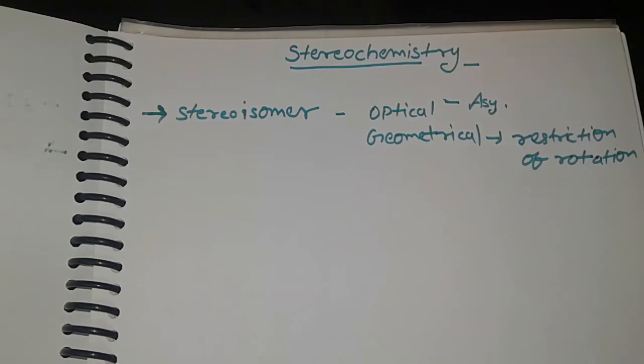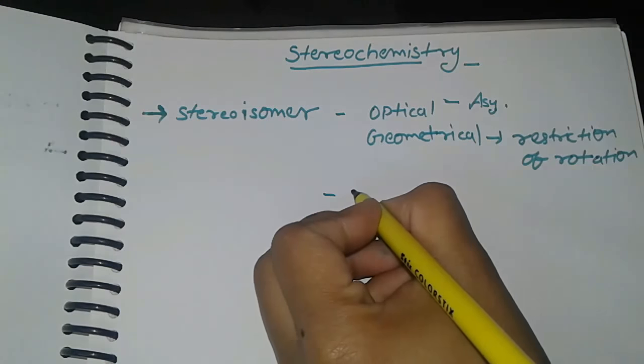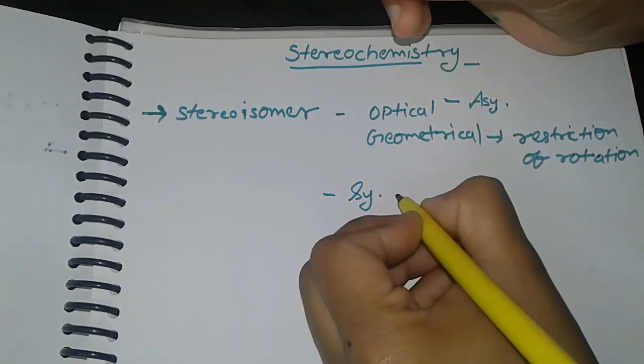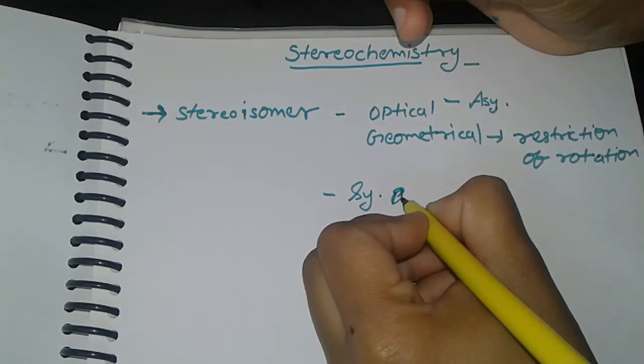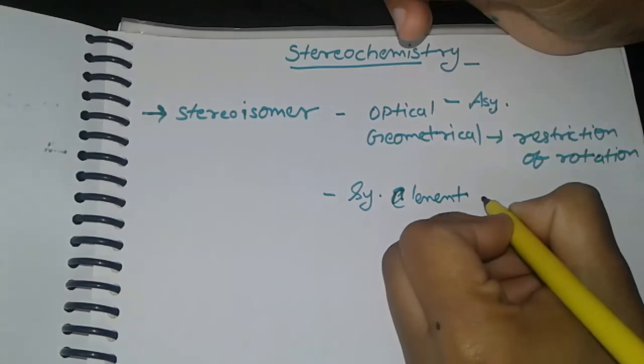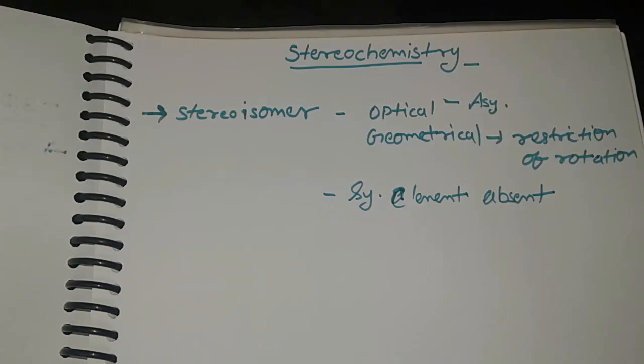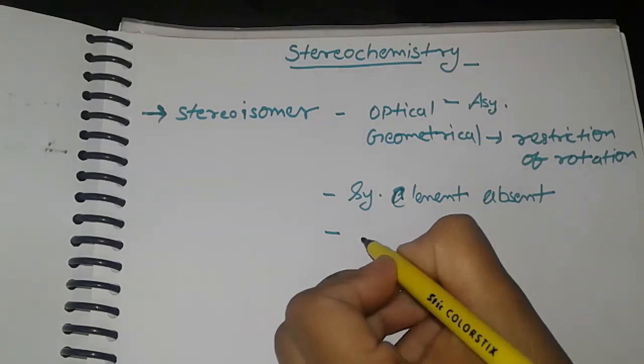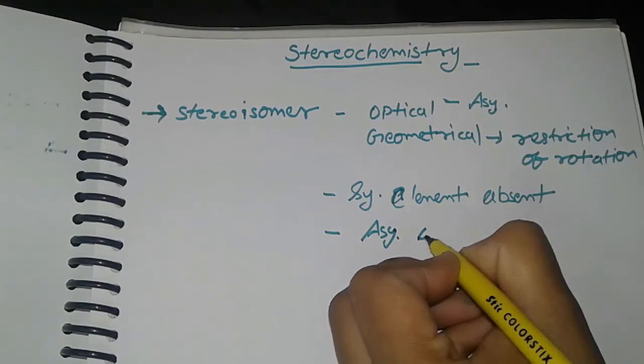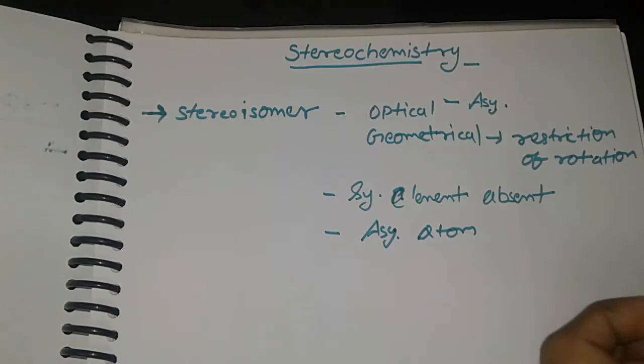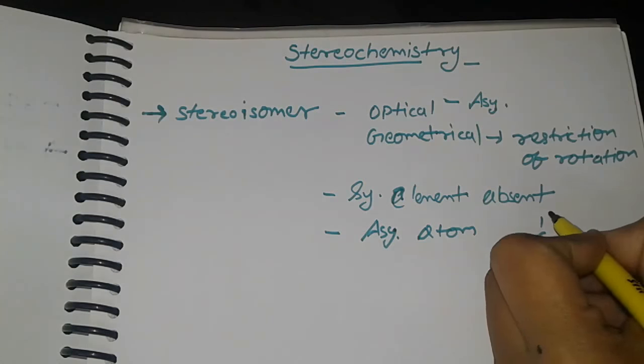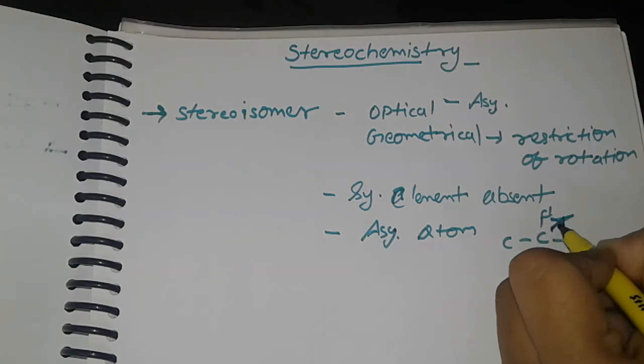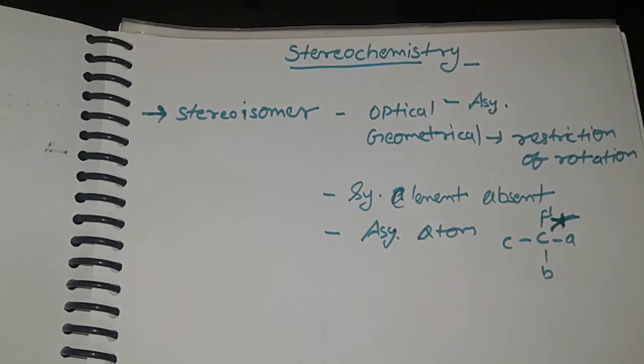Optical isomers: asymmetry can be discovered as two molecules having asymmetry, meaning no symmetry element should be present. Second, the atom itself should be asymmetric. An asymmetric atom is an atom whose all valencies are fulfilled by different functional groups or different atoms. This is called an asymmetric atom or chiral atom, and is indicated with a star.